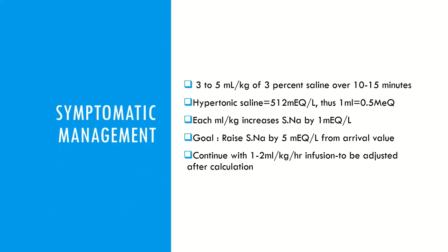For symptomatic management: any child presenting with seizures and hyponatremia — give 3 to 5 ml per kilogram of 3% saline over 10 to 15 minutes. Three percent saline has a concentration of 512 milliequivalents of sodium per liter; approximately 0.5 milliequivalents per ml, and each ml per kilogram given raises blood sodium by about 1 milliequivalent per liter. The goal is to raise serum sodium rapidly by 5 milliequivalents from the presenting value — this 5 milliequivalent rise is sufficient to stop symptoms. Continue with 1 to 2 ml per kilogram per hour infusion until the underlying cause is identified and a formal calculation can be done.